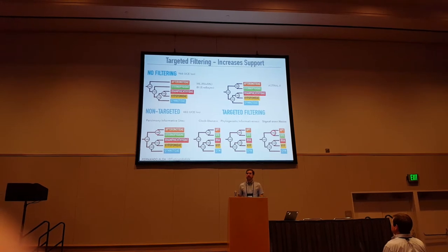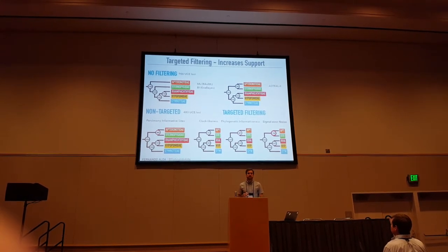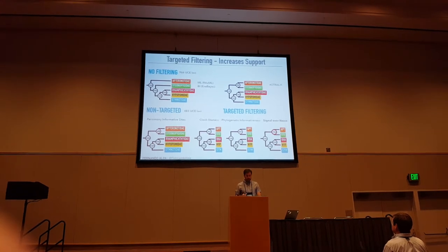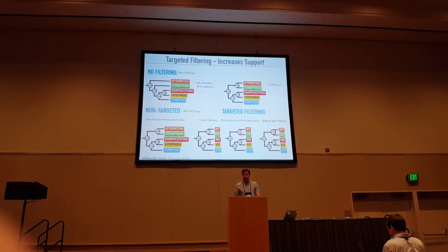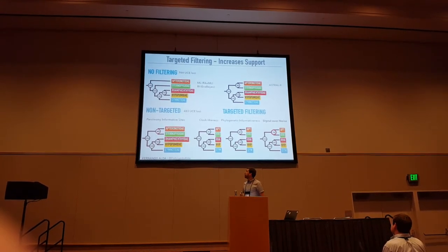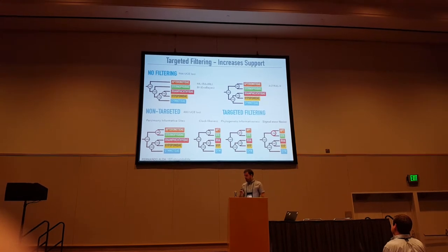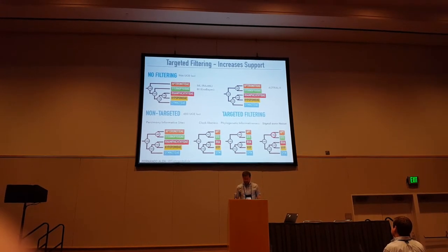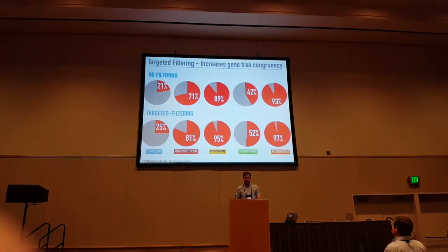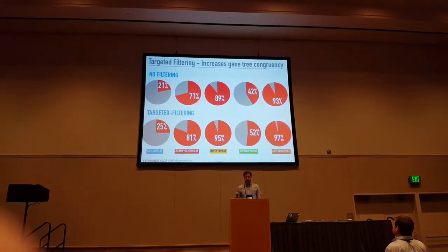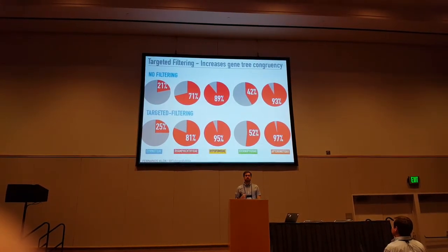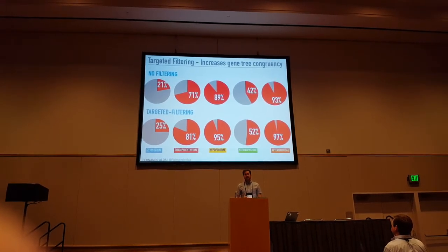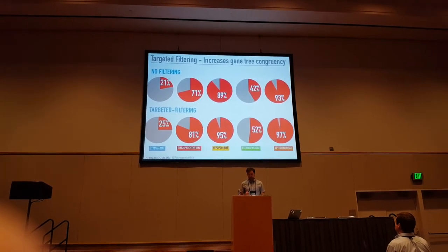After redoing all my analyses, I didn't observe any changes in support or topology for the concatenated results. But I did get an increase in support for all my species trees, with the highest support when taking into account phylogenetic signal over noise. I also observed an increase in gene tree congruency, represented by the frequency of gene trees that recover my families as monophyletic.